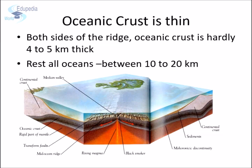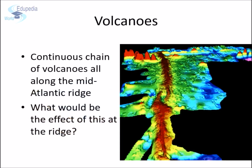It was also found that where these ridges are located, the ocean floor is very thin — hardly 4 to 5 km thick — whereas the rest of the ocean floor is around 10 to 20 km thick. Harry Hess also found that there is a continuous chain of active volcanoes all along the mid-Atlantic ridge. This would mean there was continuous eruption of magma from beneath the surface in the water, and scientists set out to explain the effect of such continuous eruption.